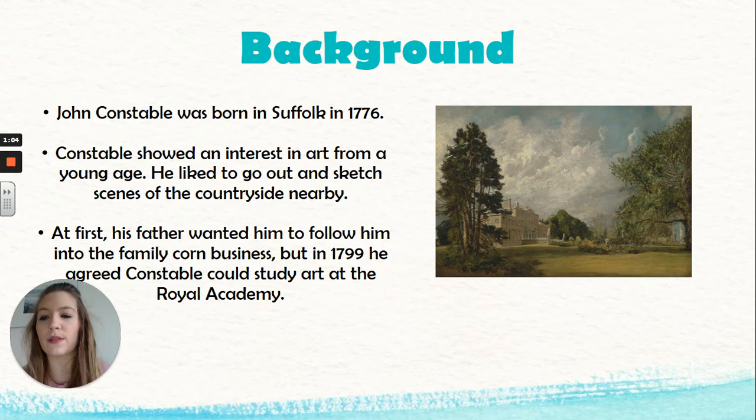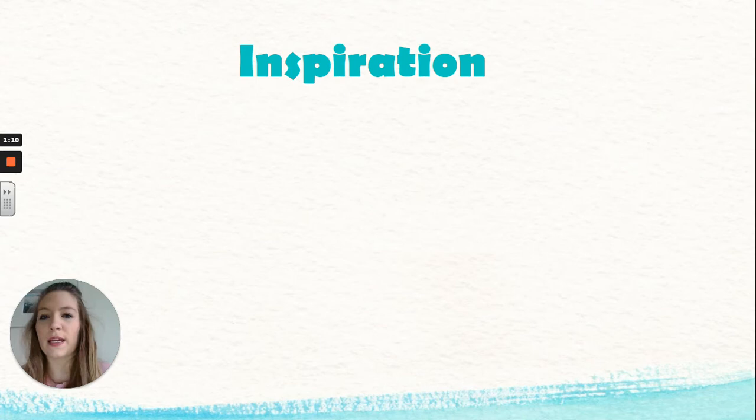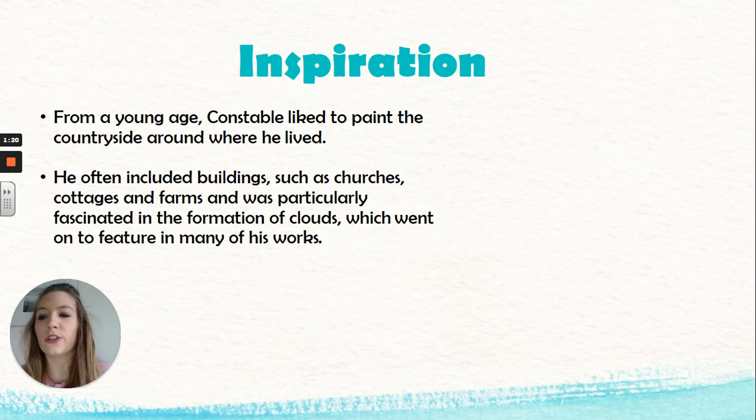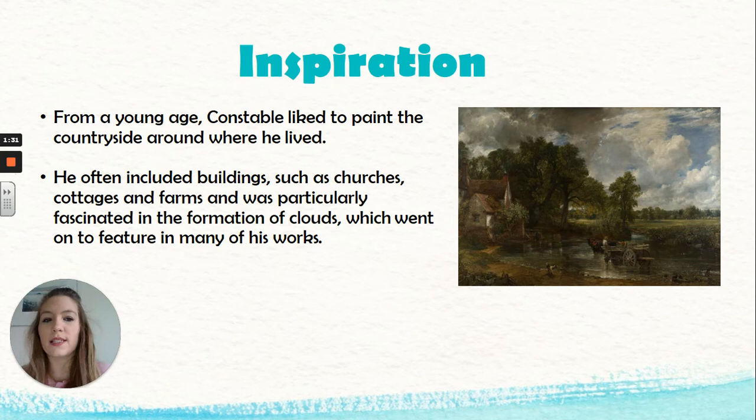So what is it that inspired John Constable? From a young age he liked to paint the countryside around where he lived, and he often included buildings such as churches, cottages and farms. He was particularly fascinated by the way that clouds formed in the sky, and this went on to feature in many of his works. You can see them in this painting here.